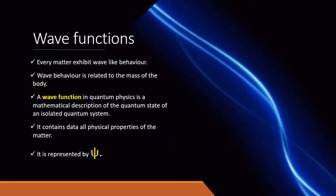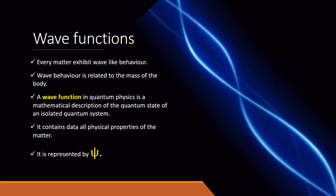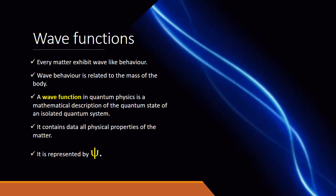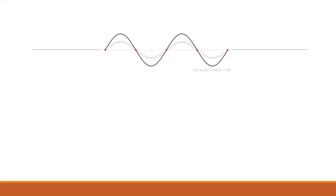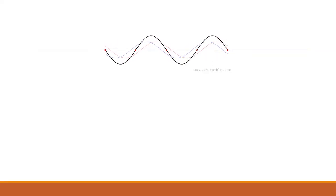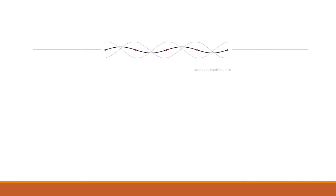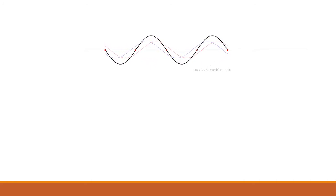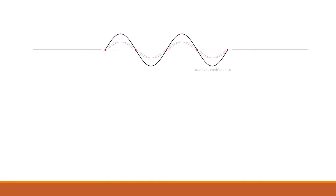A wave function is represented by the Greek letter psi. A wave function contains all the details about a system, such as its position, energy, momentum, and so on.